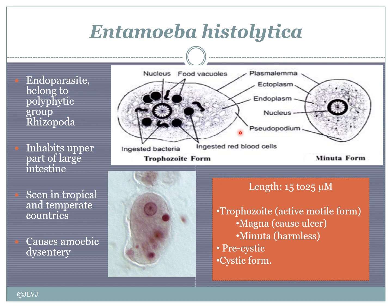Entamoeba histolytica inhabits the upper part of the large intestine and is localized mainly in tropical countries — those close to the equator — and also in temperate countries, though it is not prevalent in very cold climates. In countries like India, it is a very serious problem, causing dysentery. Dysentery's main symptoms are loose motion, blood in the stool, and painful gastritis-type feeling.